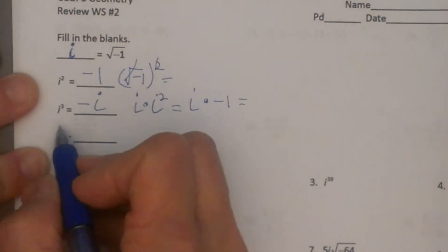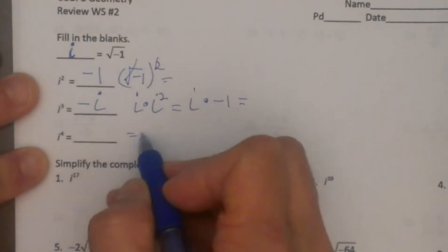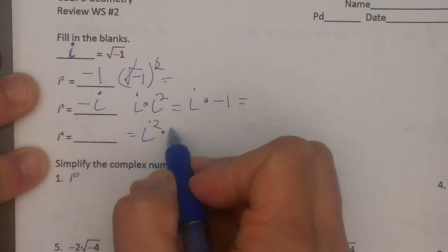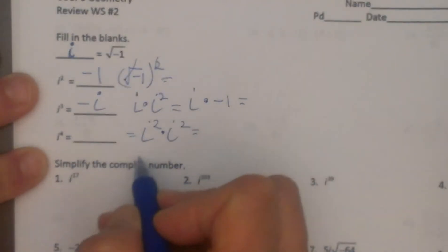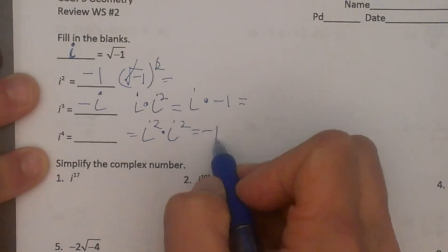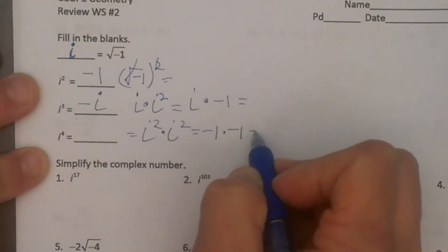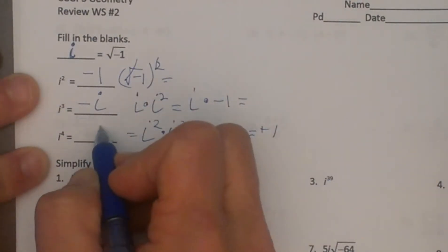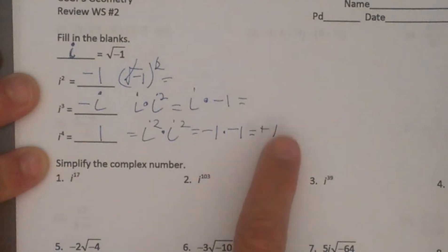And then i to the fourth power is equal to i squared times i squared. Well, i squared is negative one times negative one, which is a positive one. So i to the fourth is positive one.